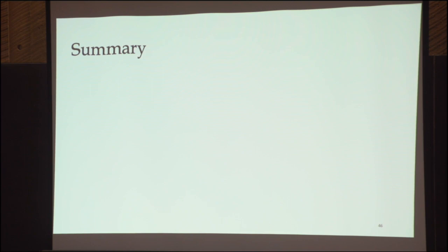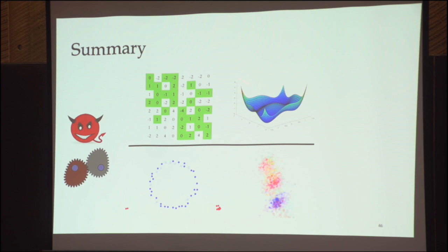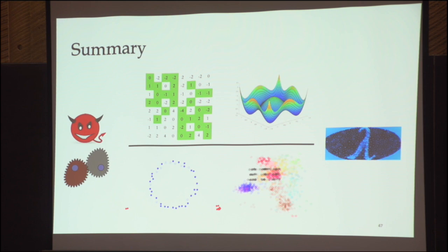To summarize: sometimes you have an adversary in your system and sometimes your model is slightly misspecified, but in both cases your algorithm's input assumption is broken and the algorithm fails. In the matrix completion case, the most natural non-convex objective has bad local optima. In the high-dimensional statistics case, your estimated covariance is far from the true covariance. But in both cases, you can use techniques from optimization to design robust algorithms without paying too much in running time — all algorithms presented have nearly optimal running time.